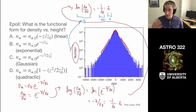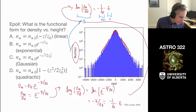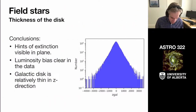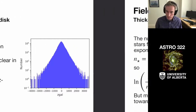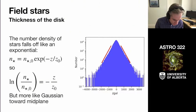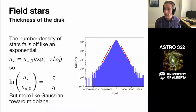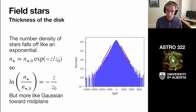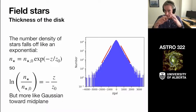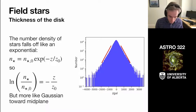We have this nice distribution and can characterize its scale height. The number density of stars falls off like an exponential between roughly one and two kiloparsecs. Toward the center where most stars are, it has a bit more of a Gaussian structure. So this weird distribution is kind of Gaussian near the center with longer exponential wings.